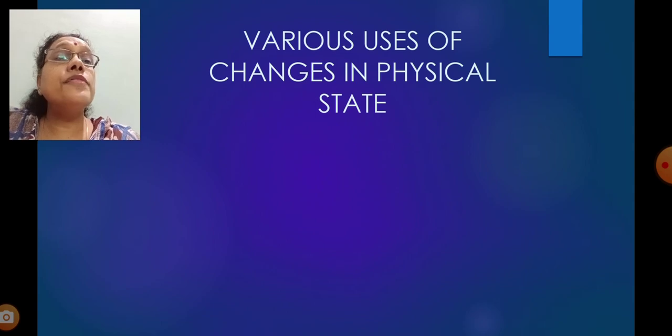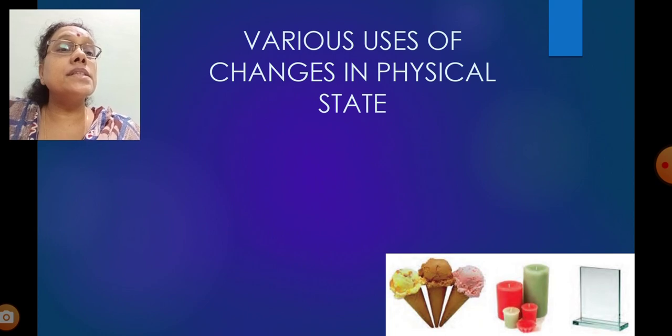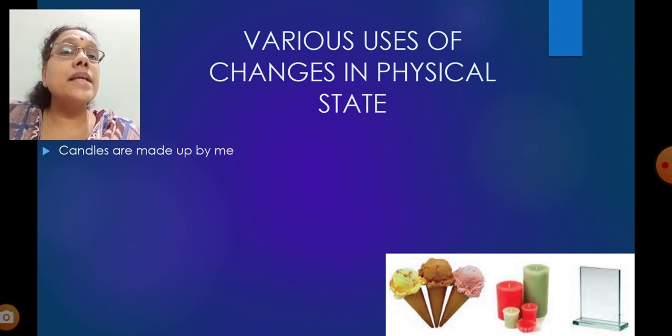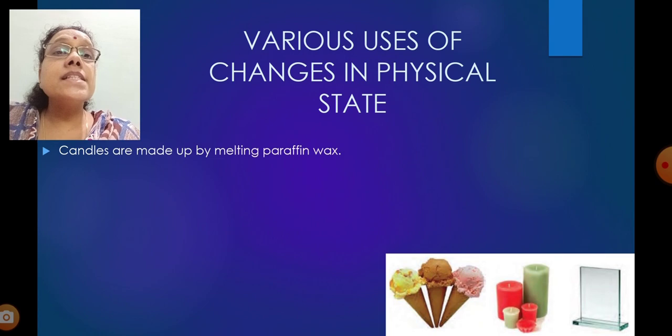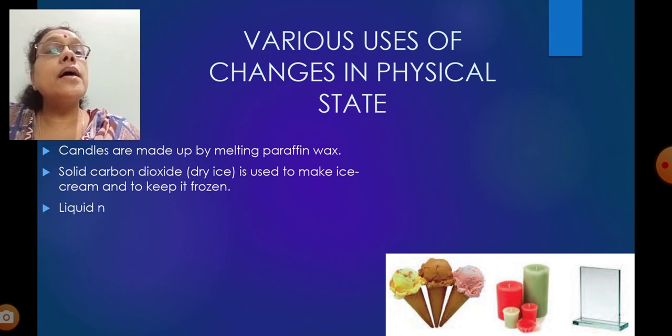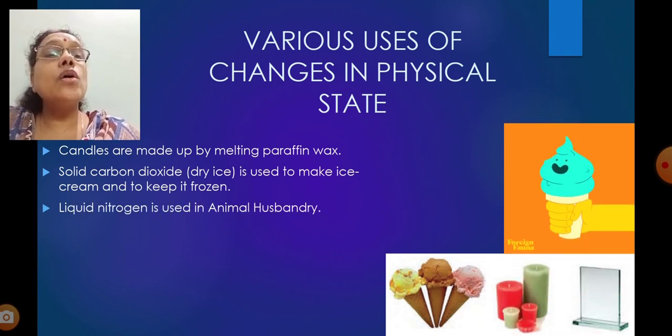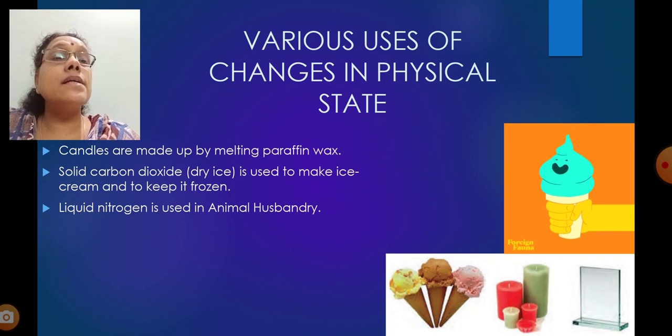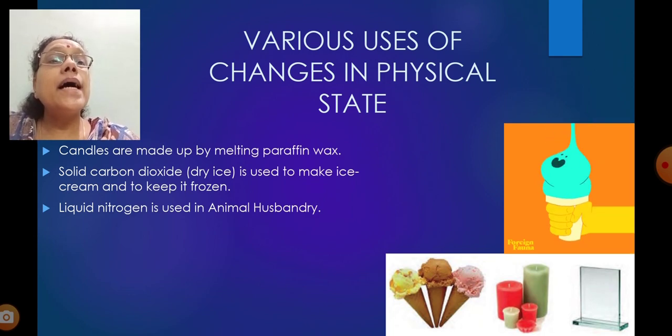That is about freezing. Various uses of changes in physical state. There are many uses of physical state changes. Ice cream, you all like ice cream, no? What is the state of ice cream? Mostly it is in the solid state as you purchase from the shop. But afterwards, if you don't eat and keep it outside the refrigerator, it slowly, gradually turns to liquid state. These candles are made by melting paraffin wax. Solid carbon dioxide or dry ice is used to make ice cream and keep it frozen.